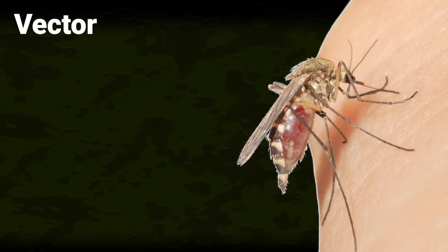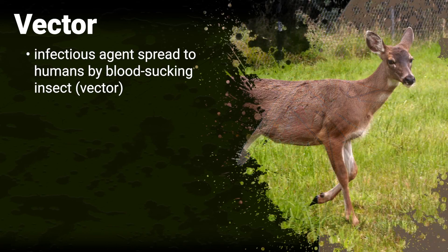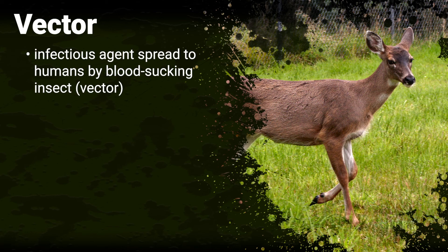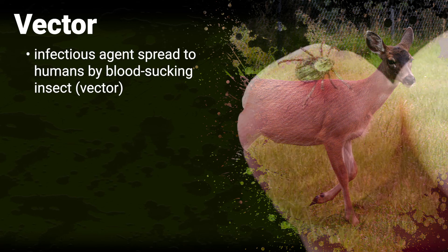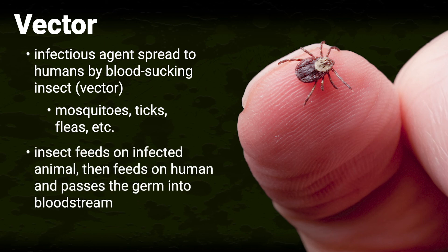Vector. People may also contract disease through a vector — an organism that does not cause the disease itself but spreads an infectious agent to humans, usually by biting. Blood-sucking insects can spread germs by biting an infected animal and then biting a human, introducing germs from one host to another. Mosquitoes, ticks, and fleas are classic examples of vector organisms that feed on an infected animal, then feed on a human and pass the germ into their bloodstream.